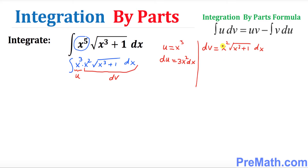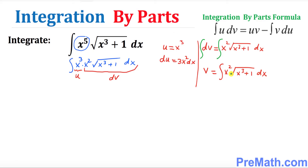Let's take care of the integral on this side to find v. That's what we want to find. We want to find v, so let's integrate both sides. You know that the derivative and integral undo each other. So what we simply get is v equal to the integral of x² times √(x³ + 1) dx.